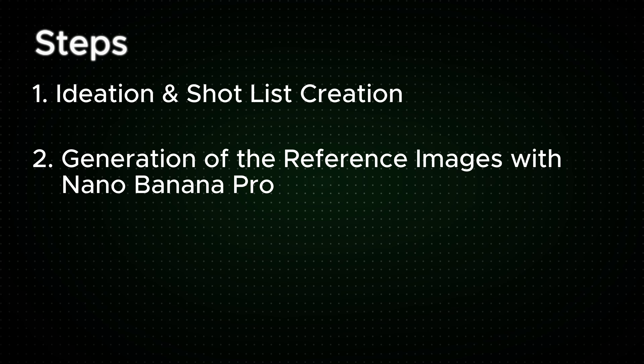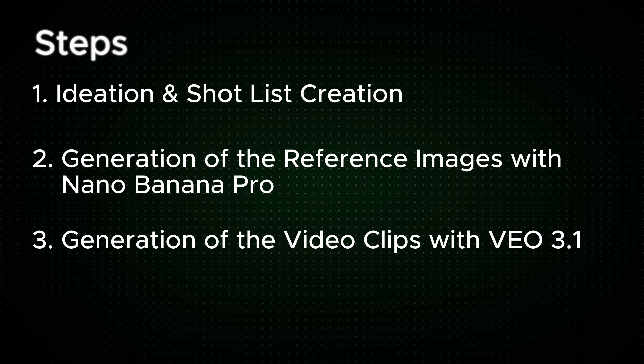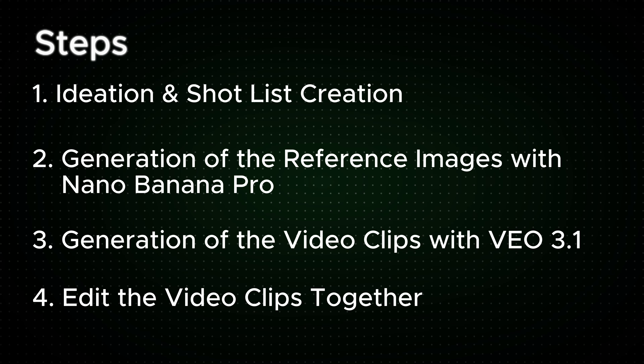Next is the generation of the reference images with Nano Banana Pro. We'll create at least one image for each video clip that we want, so we can make sure that the video clip we're going to create is spot on. Then step number three, once we have those reference images, we're going to create the video clips using Google's VO 3.1. Then lastly, we're going to pull all those clips together, put them in editing software, and maybe add some music too to make it look professional. There are also some extra tips and tricks I'm going to go into in each step that really make a world of difference in order to make it look professional.